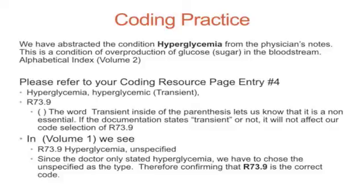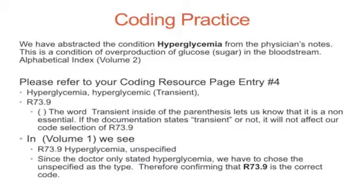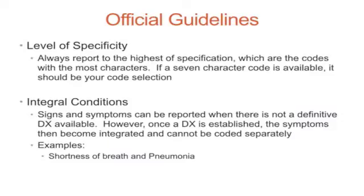Coding Practice: We have abstracted the condition Hyperglycemia from the physician's notes. This is a condition of overproduction of glucose (sugar) in the bloodstream. In the Alphabetical Index, Volume 2 — please refer to your coding resource page, entry number 4 — Hyperglycemia, Hyperglycemic Transient, leads to R73.9. The word 'transient' inside the parentheses is non-essential; whether the documentation states transient or not, it will not affect our code selection of R73.9. In Volume 1, we see R73.9, Hyperglycemia, unspecified. Since the doctor only stated hyperglycemia, we choose unspecified as the type, confirming that R73.9 is the correct code.